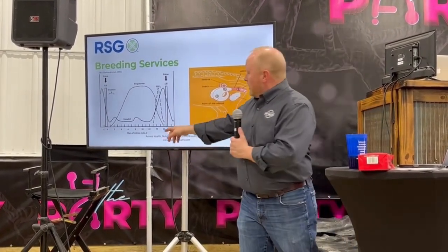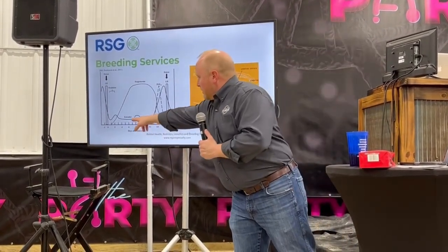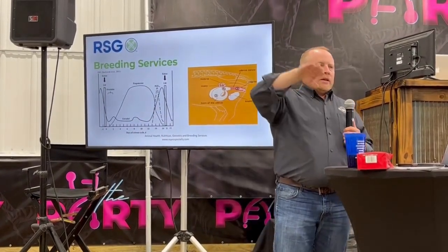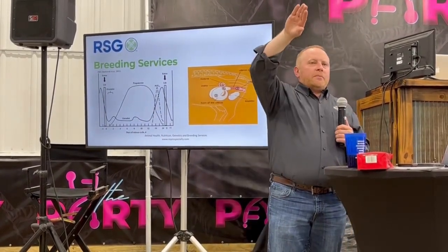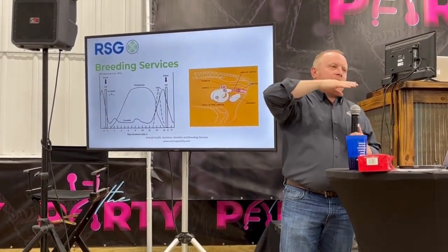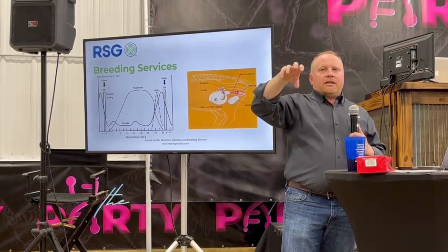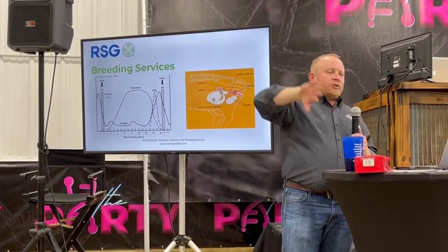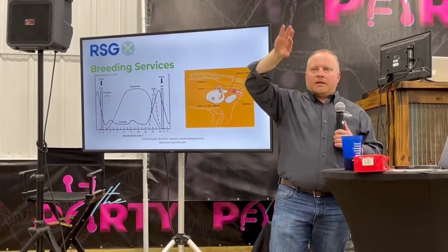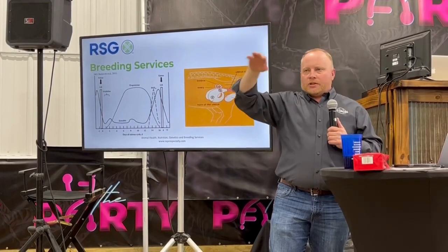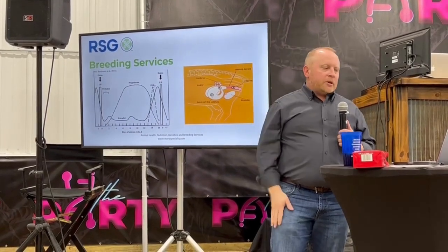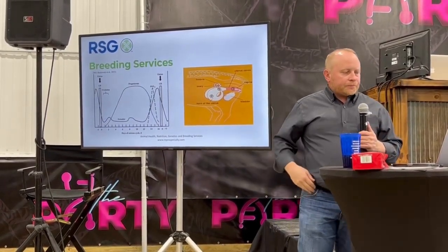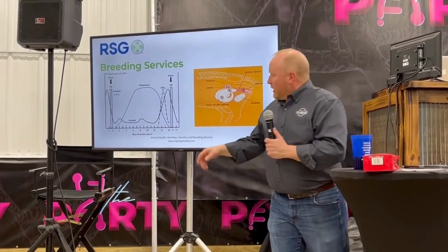There at the bottom is estradiol. It goes low and then it spikes up. So when those animals come into heat and they stand to be mounted, that is the estradiol on our system — that's the estrogen that's causing them to be receptive to the male.